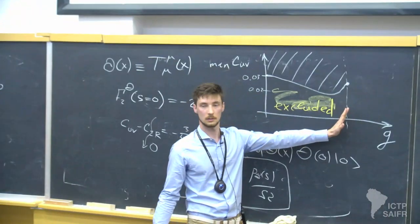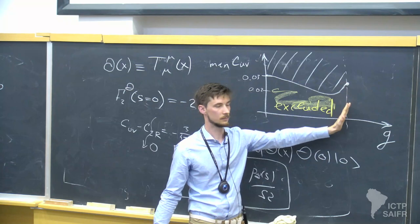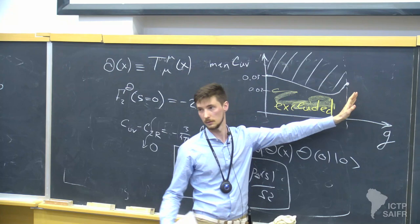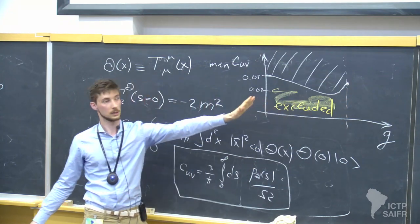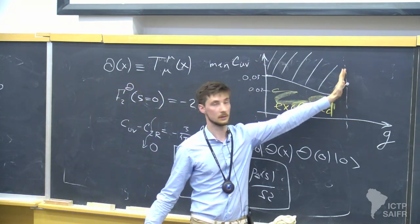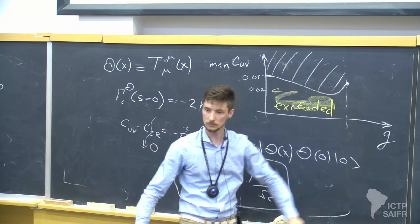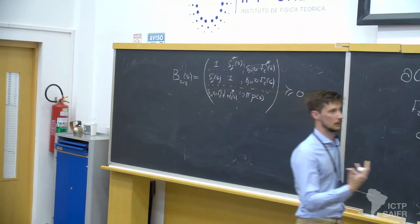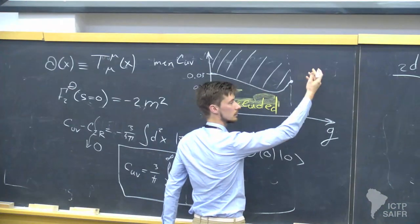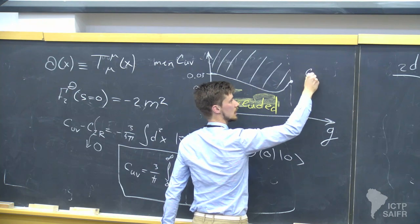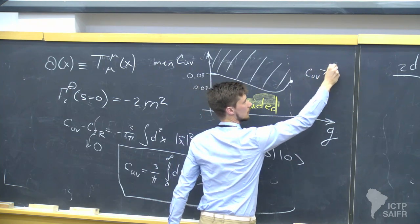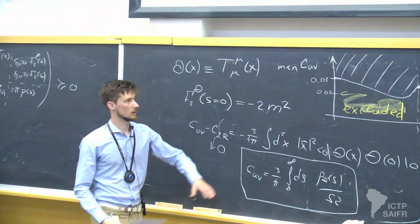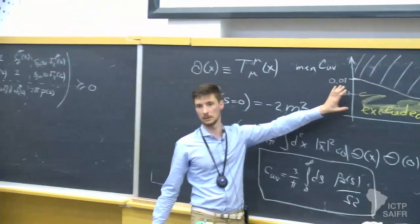We check that the bound becomes unfeasible at some point G, and this is consistent with the S-matrix bootstrap paper where the bound on the maximal coupling G was placed — so this matches precisely. Unfortunately, all physical unitary models in CFT obey C_UV greater than or equal to one half, which is saturated by the 2D Ising model. Our bound for now is much weaker.